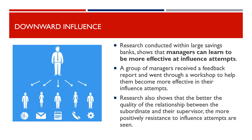Research conducted within large savings banks shows that managers can learn to be more effective at influence attempts. A group of managers received a feedback report and went through a workshop to improve their effectiveness. Research also shows that the better the quality of the relationship between a subordinate and their supervisor, the more positively resistance to influence attempts is seen.